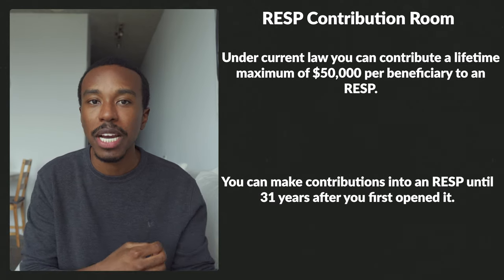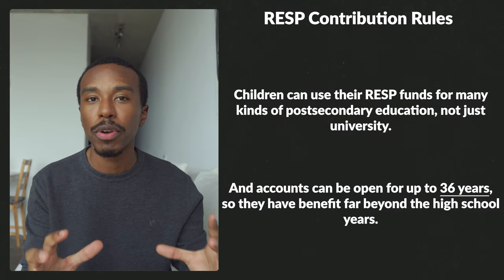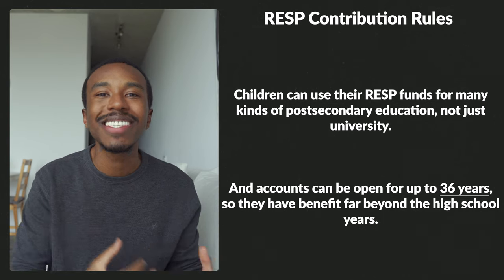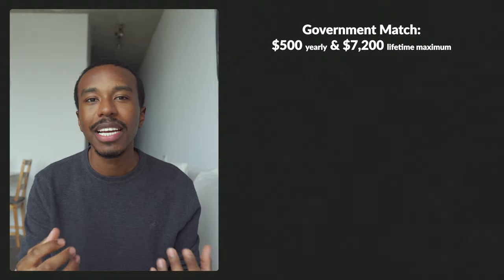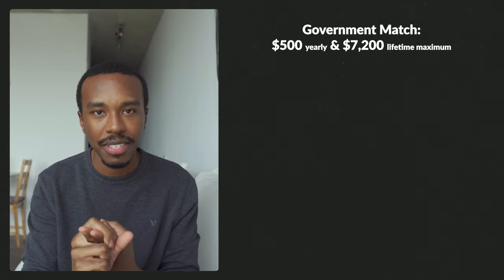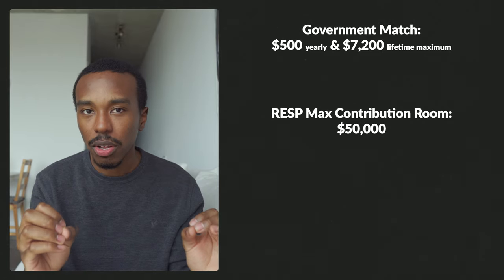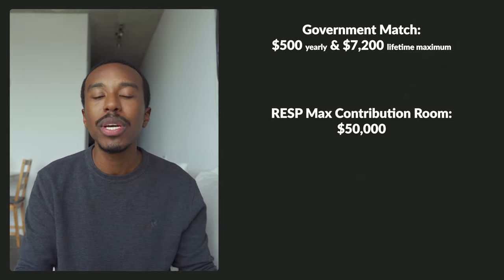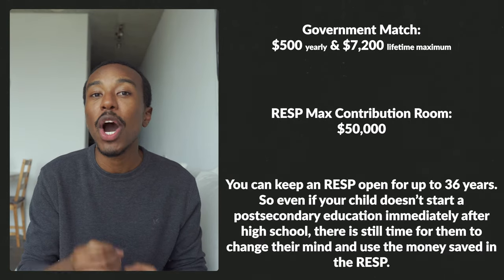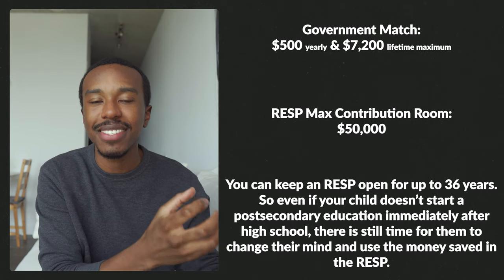You can continue adding money up to that $50,000 max until the RESP hits its 31st year of being open. After that, it's important to remember that the RESP can remain open until its 36th year. The government has a limit on how much they're willing to give you per year and per lifetime — and the total you're allowed to contribute in an RESP is $50,000. The account can remain open until the kid is in their 30s, and at any point within those 36 years you can withdraw that money and use it towards that person's education.